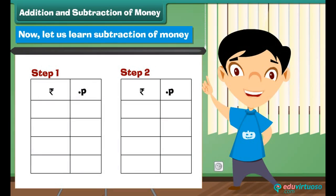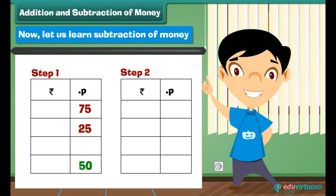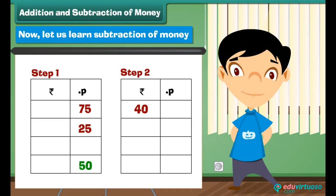Now let us learn subtraction of money. Subtract 10 rupees 50 paise from 40 rupees 75 paise. Step 1: Subtract the numbers in the paise column. 75 minus 50 is equal to 50 paise. Write 50 under the paise column. Step 2: Subtract the numbers in the rupees column. 40 minus 10 equals 30. Write 30 under the rupees column.